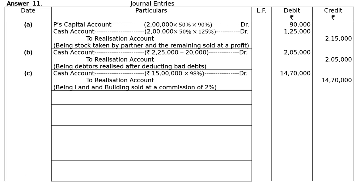Part D: machinery with book value Rs.6 lakhs was handed over to a creditor at a discount of 10%. Since the liability is settled by giving an asset, machinery being handed over to a creditor is not recorded separately in the accounts.